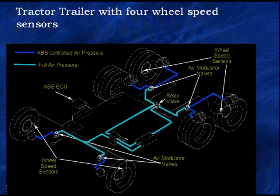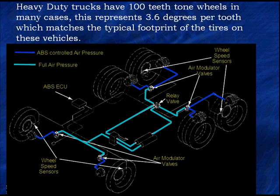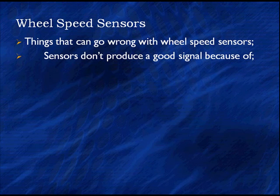Here's a truck. It's got four wheel speed sensors and four air modulator valves. This applies equally to trucks — it's the same signal, magnetic pickup. Truck books say to measure them only with ohmmeters. We've already showed you why you need to go beyond that, even on trucks. One nice thing about trucks is they typically have a hundred teeth on their tone wheel. That is 3.6 degrees for each AC waveform. That represents the footprint of the tire — out of 360 degrees, about 3.6 degrees of that tire is in contact with the road surface. So the 100 teeth represent one rotation of the tire, making it easier to keep track.